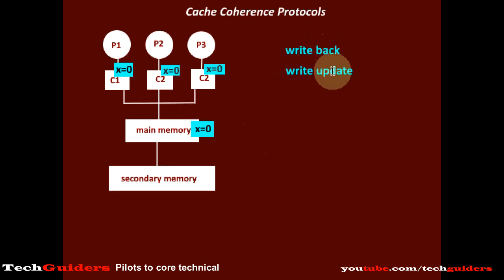In write-back with write-update, for every write we never update the shared memory, but we broadcast the updated value to all other local caches. Thus, local caches having the shared location will update the value, and the shared memory will be updated only when we replace the block.